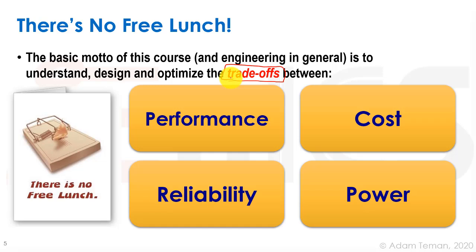When discussing VLSI — and many things in engineering — the four main categories are: performance, cost, reliability, and power. Performance is another name for speed, and that's what used to sell chips. We want to sell our CPU with a higher frequency because it looks good and does more. So performance — usually speed or frequency, and sometimes throughput — used to be the thing we always tried to head for. Nowadays we sometimes focus on other things, such as power.